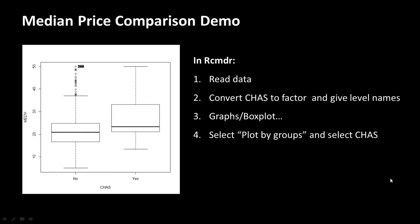What we'd like to do is compare the median price of homes in neighborhoods that adjoin the Charles River versus those that don't, producing two side-by-side box plots. I'm going to exit the presentation now and do a short demo of how to create box plots in R Commander.